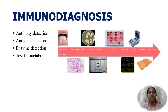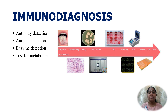Immunodiagnosis includes antibody detection using formats like ELISA and latex agglutination tests to detect serum antibodies against the cell wall mannan antigen. Antigen detection: Candida-specific antigens such as cell wall mannan and cytoplasmic antigens can be detected by ELISA. Enzyme detection assays are available for enzymes such as enolase and aspartyl proteinases. Specific metabolites of Candida such as mannitol and arabinitol can be detected, and the beta-glucan test is done for detection of 1,3-beta-glucan.